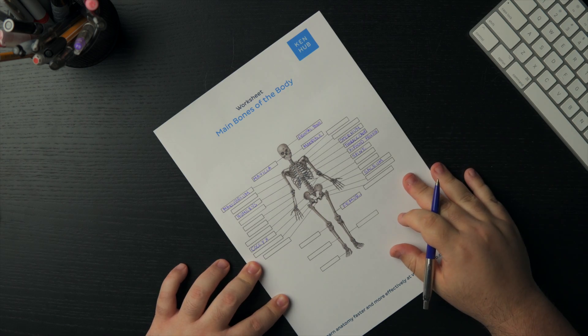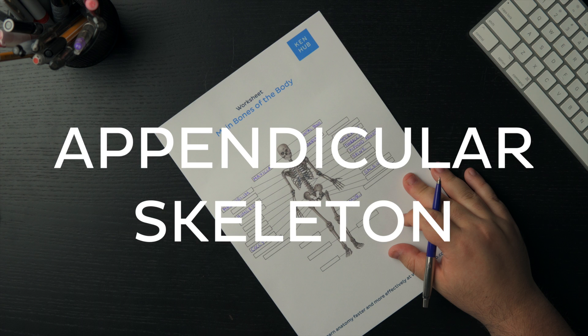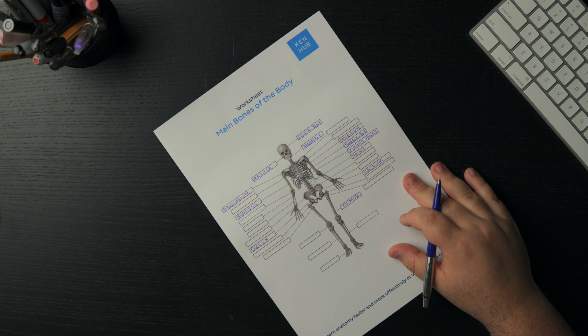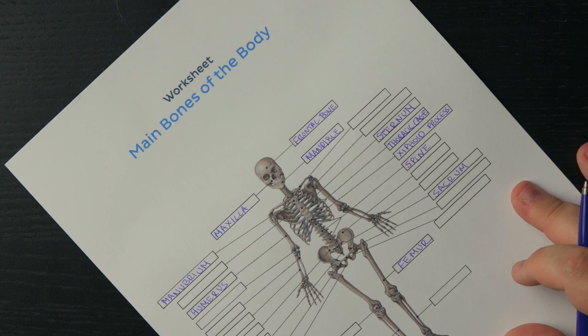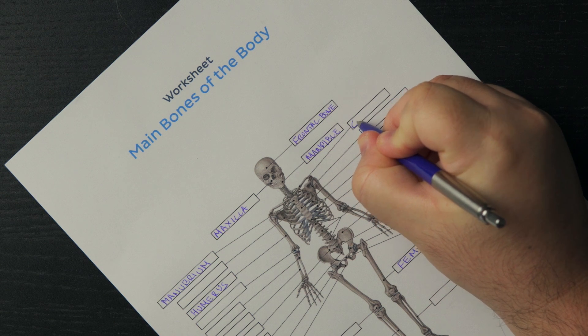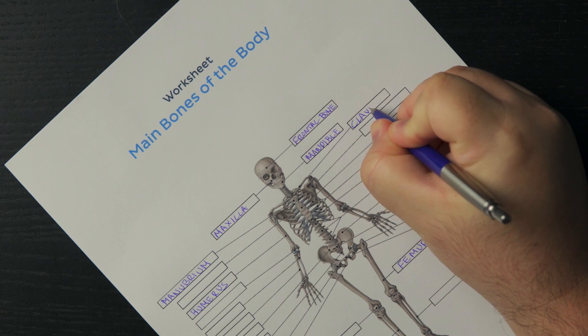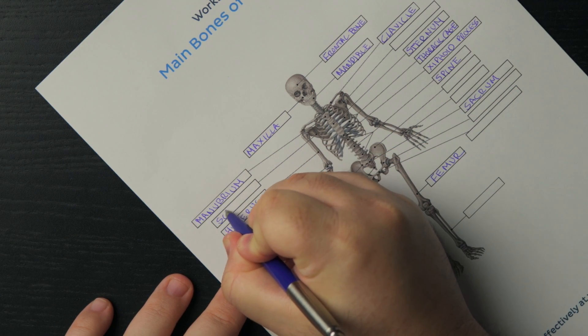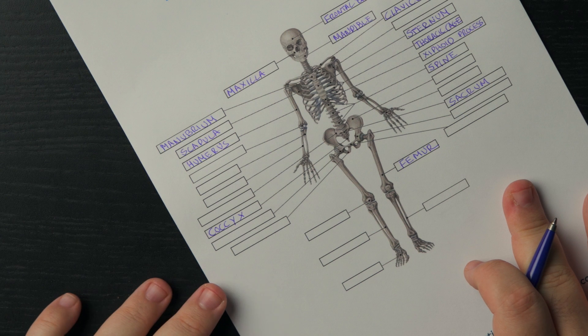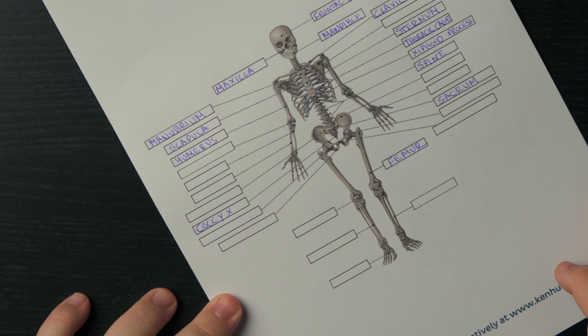All the labels for the axial skeleton are complete, so we will continue now with the appendicular skeleton. Remember, the appendicular skeleton bones are essentially the appendages that hang or append from the axial skeleton. Let's then identify the two bones that form the pectoral girdle, this famous bone or infamous bone known for its fractures, the clavicle, and the triangularly shaped scapula. We can now continue on with the bones of the upper limb, which include this one that I've already labeled, the humerus.